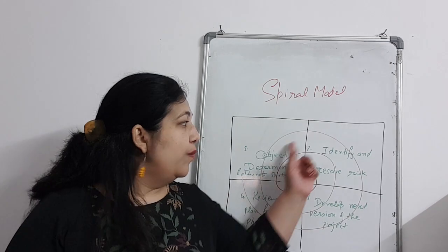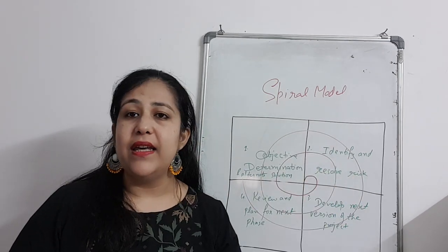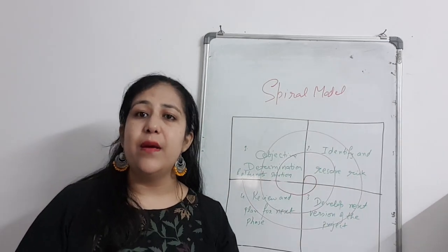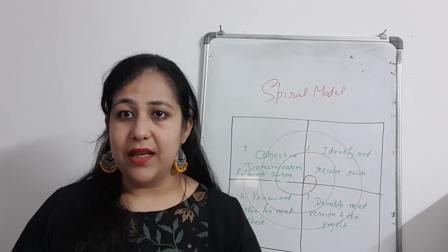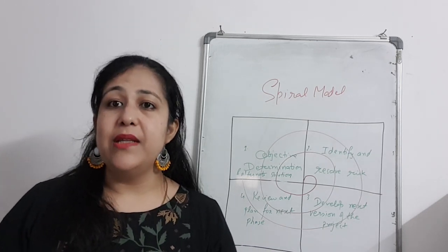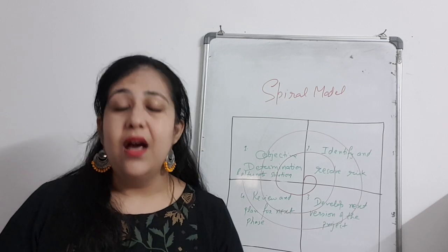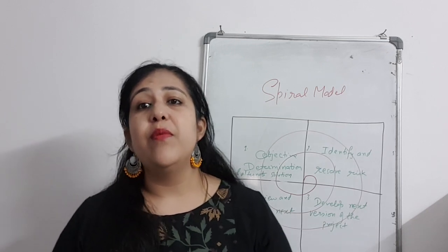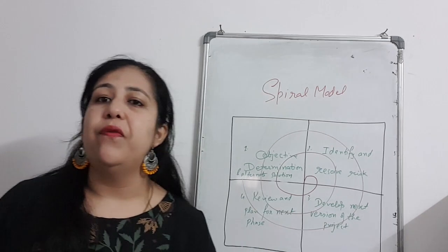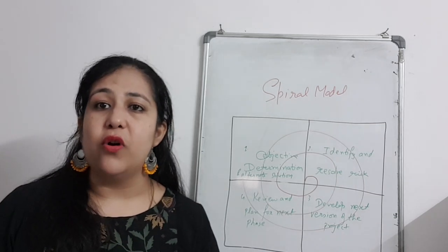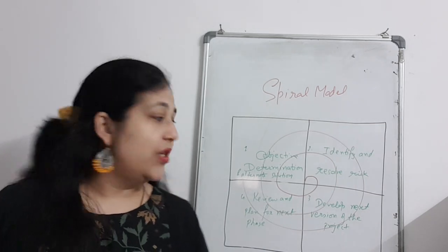Then we go into the second quadrant, where we identify what risks can be there based on what we have planned. First we analyze what risks could exist, then we identify those risks and resolve them — finding out how the risks can be resolved and how the problems can be solved.